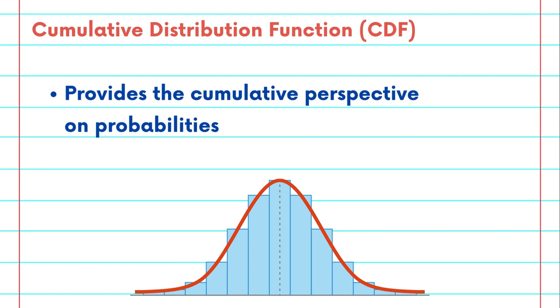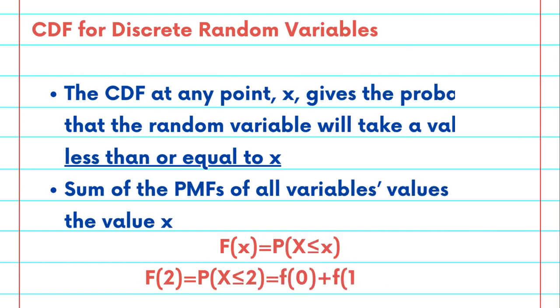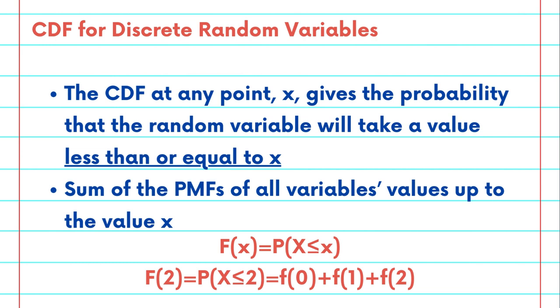For discrete random variables, the CDF at any point x gives the probability that the random variable would take a value less than or equal to x. It essentially is the sum of the PMFs of the variable's values up to value x.